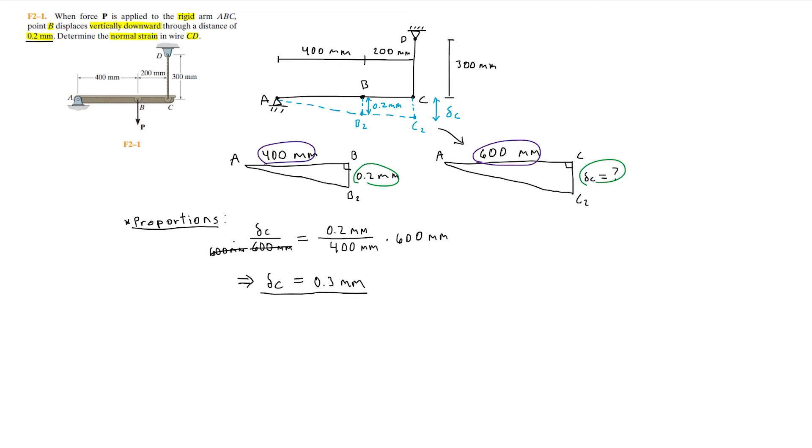Now that we found delta C we can find the normal strain in wire CD. We know that strain epsilon is defined as change in length delta L over original length L0, which is L minus L0 over L0. In this case the original length L0 is 300 millimeters and the extended length L is equal to 300 millimeters plus delta C which is 0.3 millimeters. Hopefully now you can see why we needed to know delta C in order to find the normal strain.